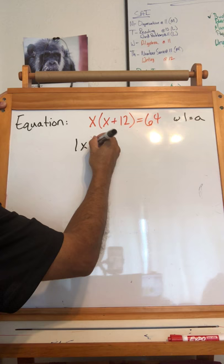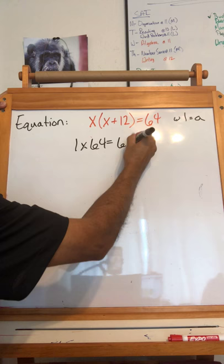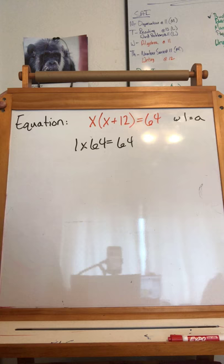1 times 64 equals 64. But I need a difference of 12, because x plus 12 is the solution I'm looking for. This is a difference of 63, so let's go to the next one.